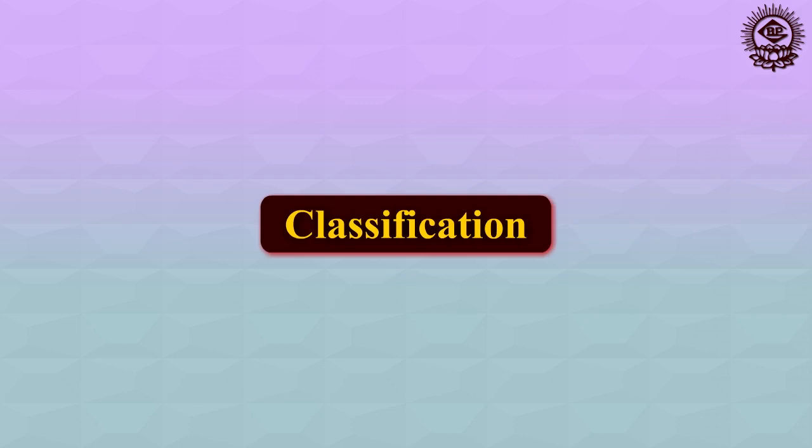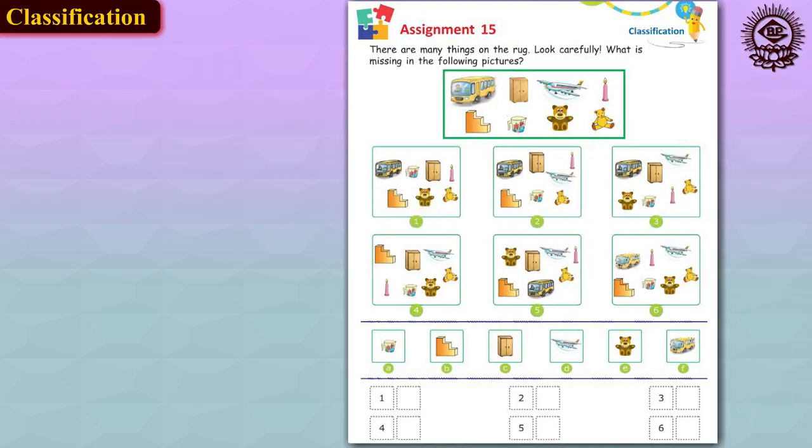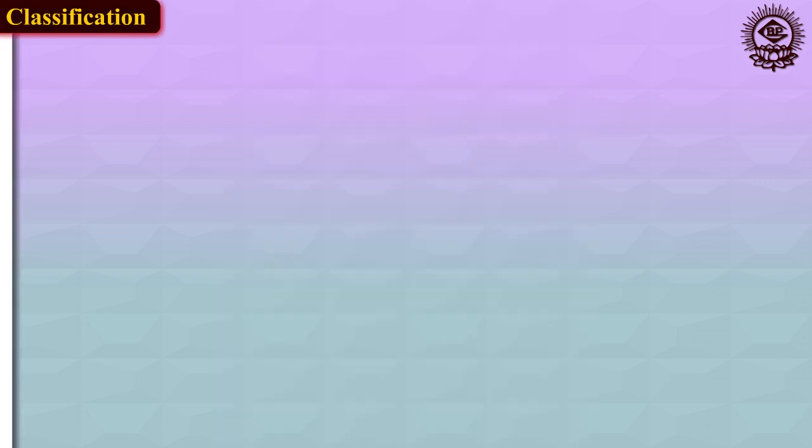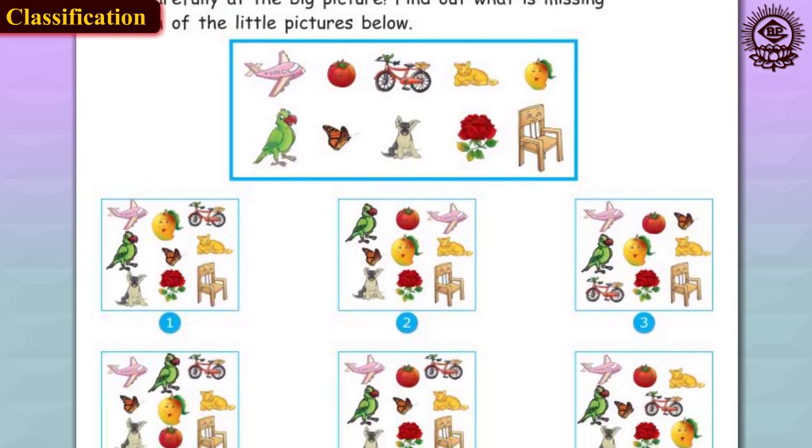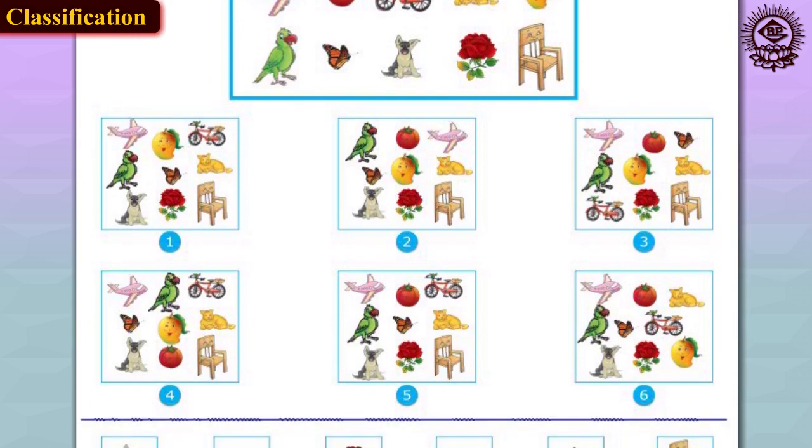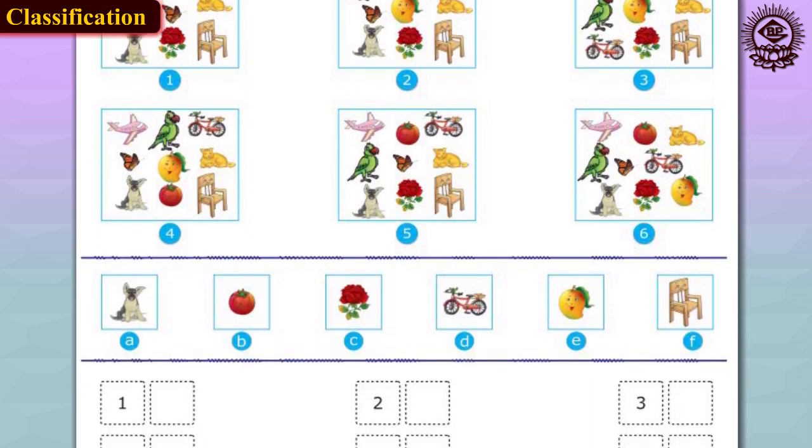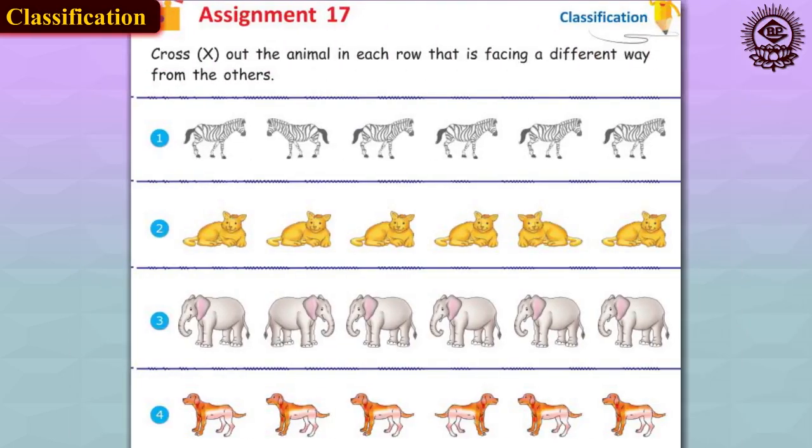Third is classification. A child must be able to classify objects into groups before they can take part in significant number learning. Classifying activities help children to develop a range of thinking skills and build the foundations for later problem solving. Many classification activities lend themselves to being great fine motor activities as well.